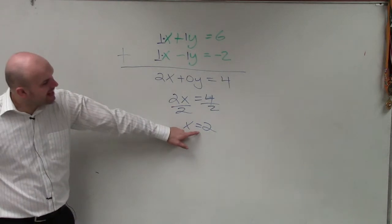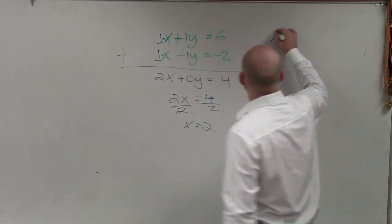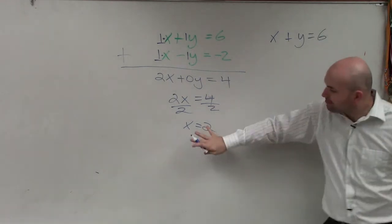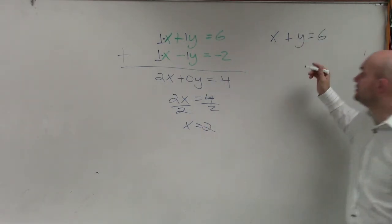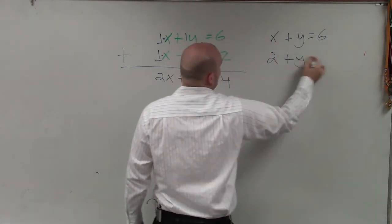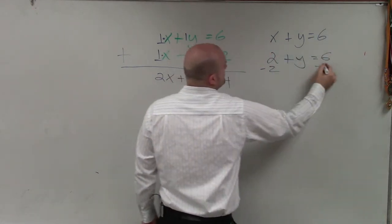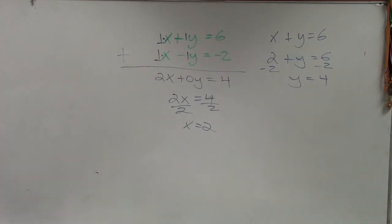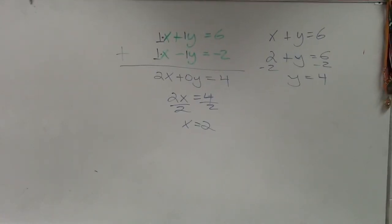And now that I know what x is, I can go back to one of these equations. And just like we did for substitution, I'm going to plug in the value of x into the equation. So I have 2 equals, oops, I'm sorry. 2 plus y equals 6. Subtract 2, subtract 2, y equals 4. Anybody have any questions on what I did?